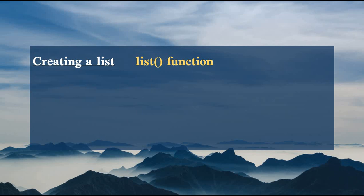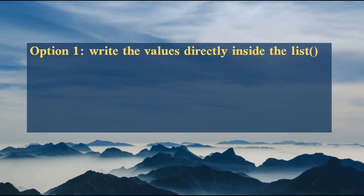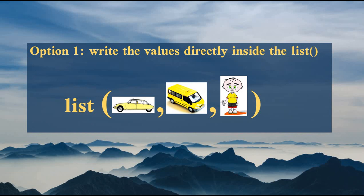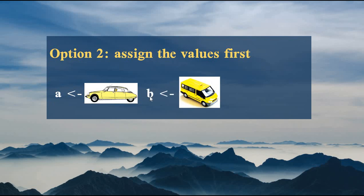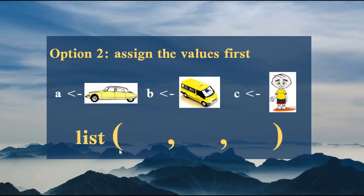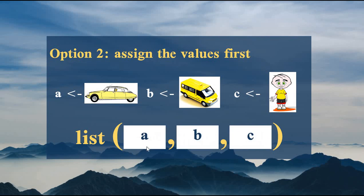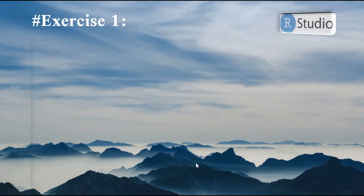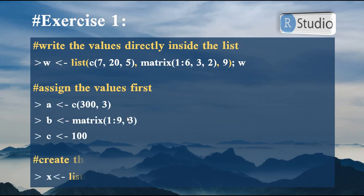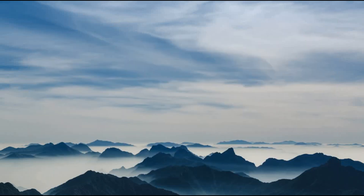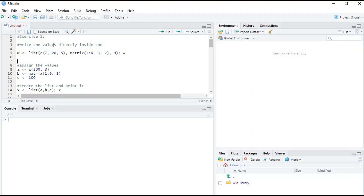To create a list you need to use the list() function, putting a comma between each element. We have two options: either write the values directly inside the list() function, or assign the values first to variables and then put the variable names inside the list() function. In exercise one, the first example writes values directly and the second example assigns values first.